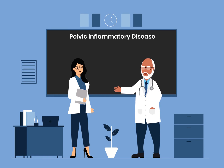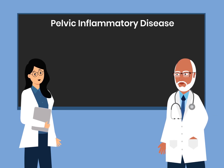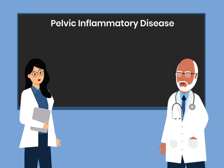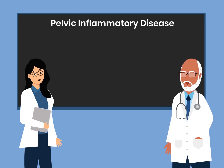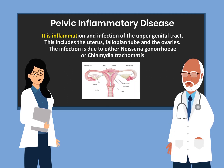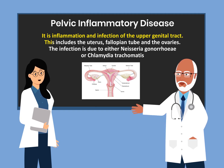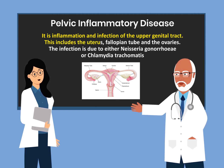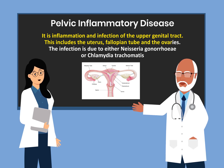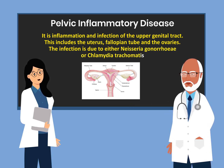Today, I want to talk to you about Pelvic Inflammatory Disease, also known as PID. I'm going to ask a series of questions and provide answers. Let's begin. What is Pelvic Inflammatory Disease? It is inflammation and infection of the upper genital tract. This includes the uterus, fallopian tube, and the ovaries. The infection is due to either Neisseria gonorrhea or Chlamydia trachomatis.